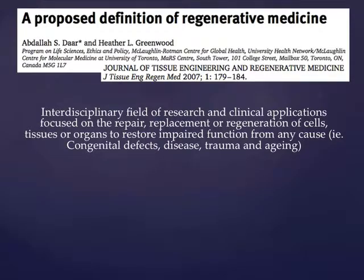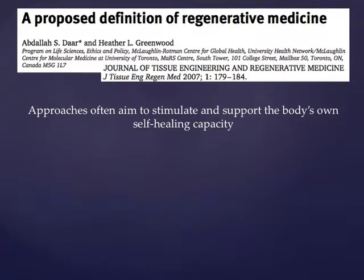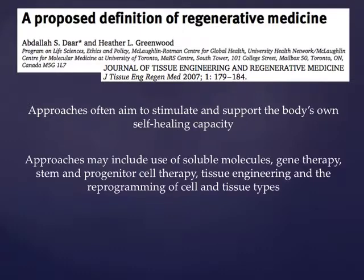This paper came out by Dar and Greenwood, and they saw there was a bunch of different definitions out there. Their proposed definition is quite lengthy, but it sets the stage for what's to come. It's an interdisciplinary field of research and clinical applications focused on the repair, replacement, or regeneration of cells, tissues, or organs to restore impaired function from any cause. It combines converging technological approaches, both existing and newly emerging, moving it beyond traditional transplantation and replacement therapies. Regenerative medicine approaches often aim to stimulate and support the body's own self-healing capacity. The approaches may include soluble molecules, gene therapy, stem and progenitor cell therapy, tissue engineering, and the reprogramming of cell and tissue types.